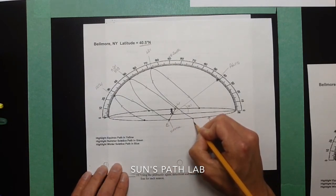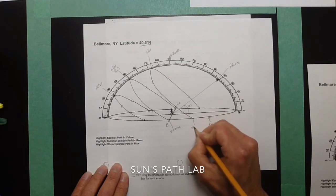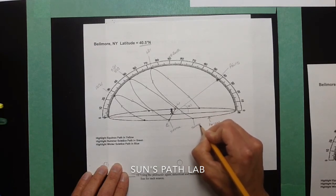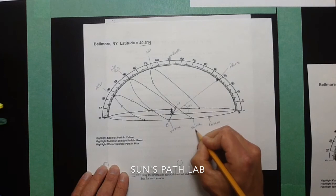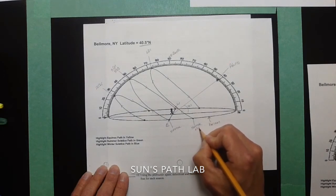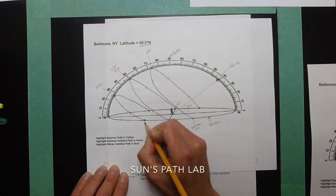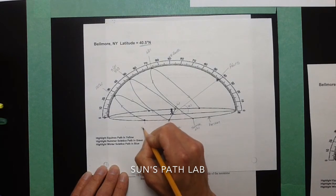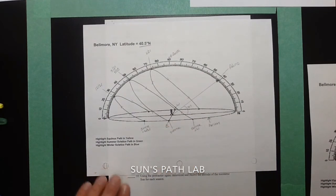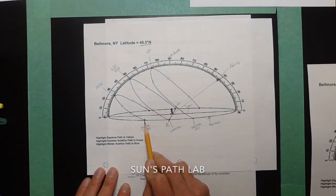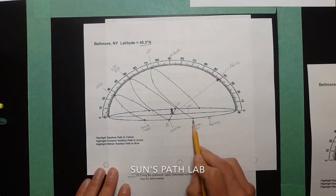On June 21st, the sunrise is the farthest north for the entire year. So that would be sunrise for 621. And over here, you'd have sunrise on your winter solstice. So on the winter solstice, the sunrise is the farthest south of east for the year.